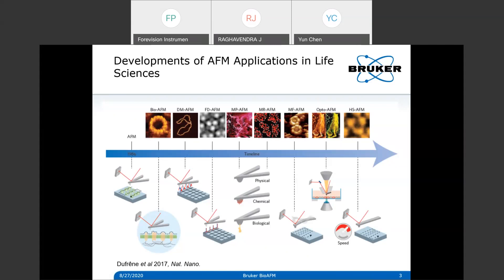Contact mode is still used today because it's easy, the feedback loop is simple, and it can scan faster. Some information can only be extracted from contact mode - for example if you're interested in the lubrication of the interface and measuring friction. However, contact mode can be quite destructive because you're applying a constant force over the sample surface, which may not be ideal for soft biosamples like cells or proteins.